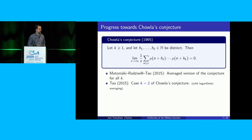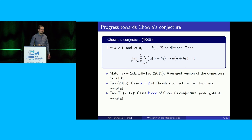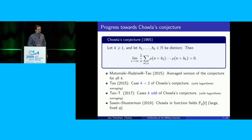In later work with Terry, we relaxed this need for logarithmic averaging a bit. And two years later, with Terry, we proved the odd-order cases of Chowla's conjecture — if the number of shifts k is odd, then Chowla's conjecture holds, again with logarithmic averaging. A further piece of evidence is that Savin and Shusterman verified the function field analog of this conjecture.